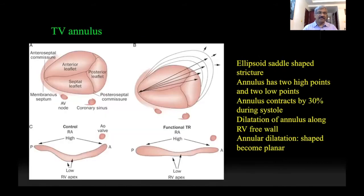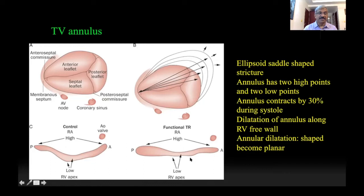The tricuspid annulus is an ellipsoidal structure with two high points related to the RVOT and the aortic valve, and two low points related to the coronary sinus. Normally, when the RV contracts, the tricuspid annulus also reduces in size by as much as 30%. Whenever dilatation of the RV or annulus occurs, it always dilates towards the free wall because the septal attachment is more or less fixed. As a result, this ellipsoidal saddle-shaped structure is lost, resulting in a more planar structure. This leads to non-coaptation of the leaflets due to displacement of the papillary muscles, and progressive non-coaptation results in tricuspid regurgitation.